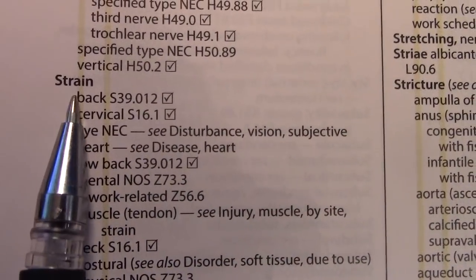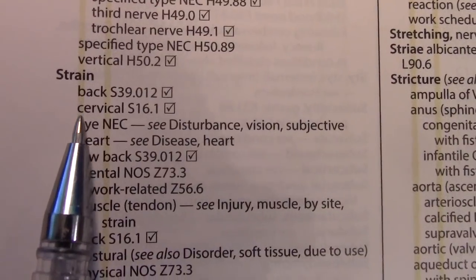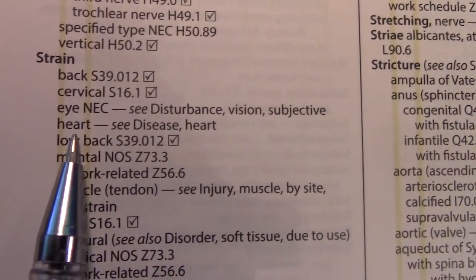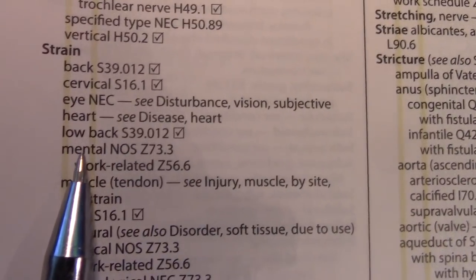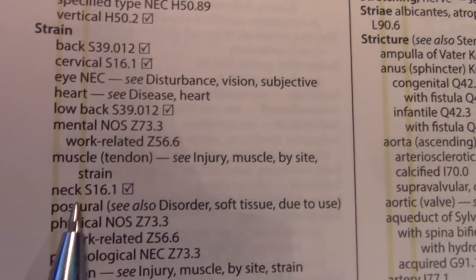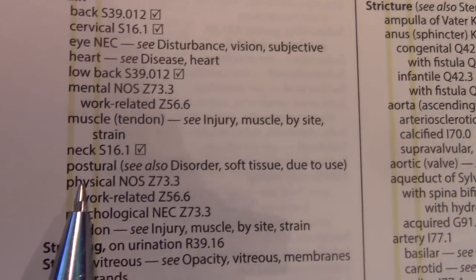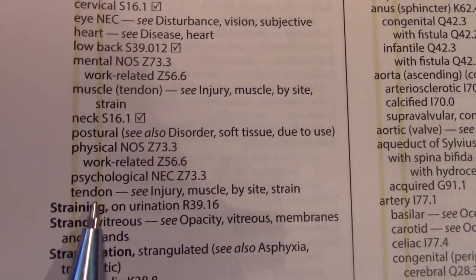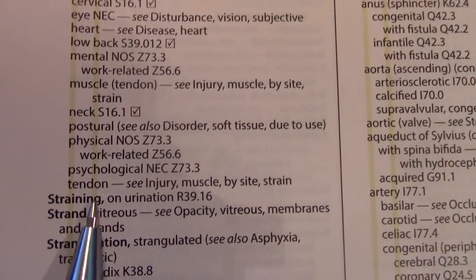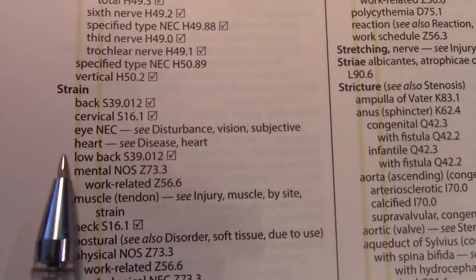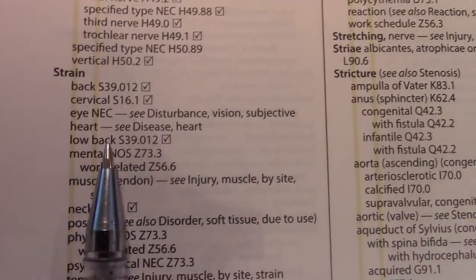See how strain — the main term strain is? But look what's under strain: back, cervical, eye, heart, low back, mental, muscle, neck, postural, physical, psychological, and tendon. But notice it didn't say arm, leg, back, or shoulder — the main strains that we would code.